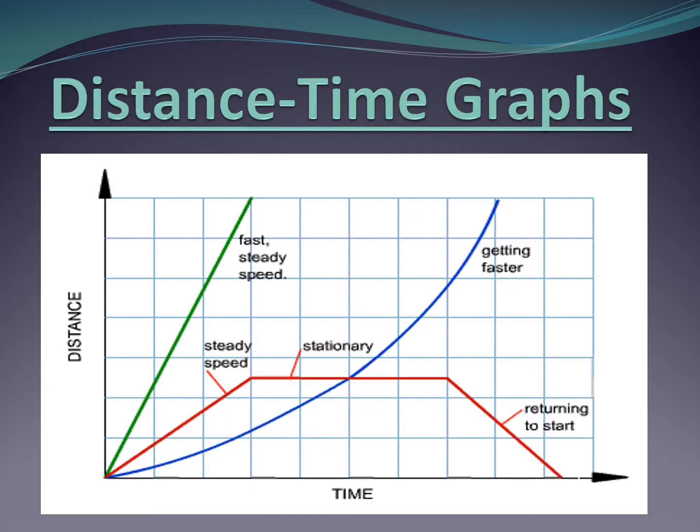Now we can interpret these graphs. For example, on your paper, you should have this color coded so that you know what you're looking at when you see these graphs. The green line here is fast, steady speed. It's pretty constant, and it's pretty fast as well because it's covering a large distance in a short amount of time.